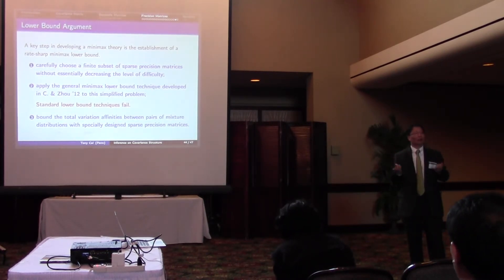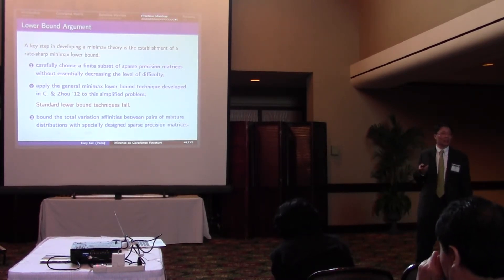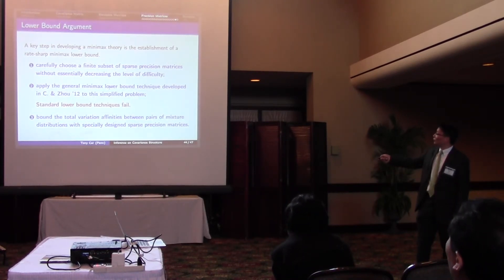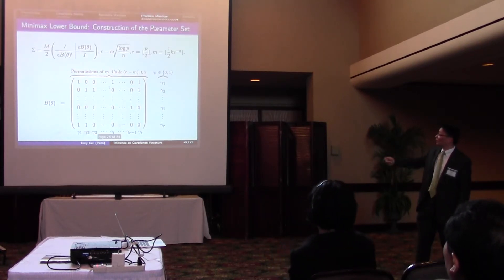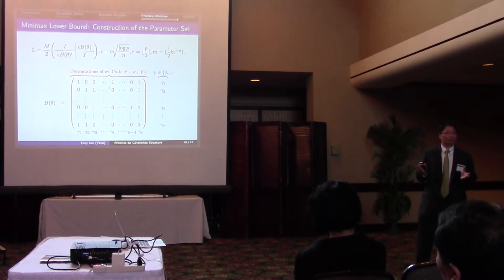You mix over many, many high-dimensional Gaussian distributions with non-identity precision matrix. And that part is technically very involved. And in terms of the mixture distribution, it looks like this. In terms of the precision matrix, oh, this should be omega, not sigma.